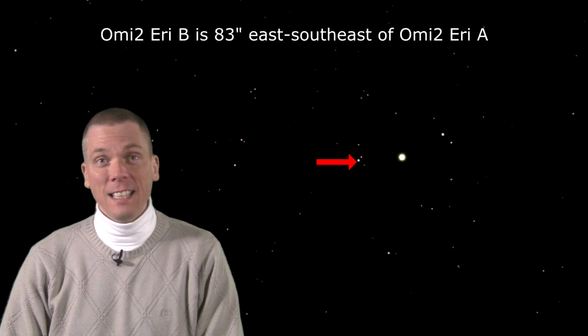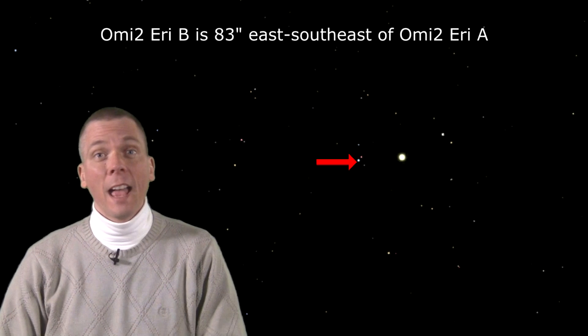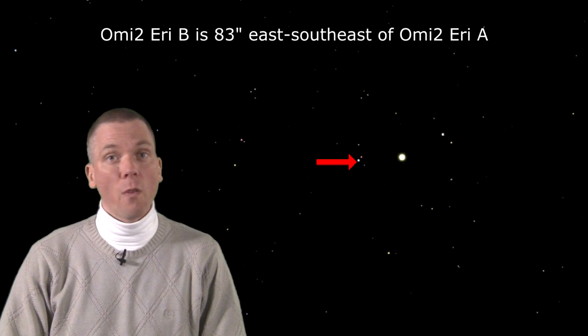It has a white dwarf companion at magnitude 9.5, probably the easiest white dwarf to find and see too, as the primary's glare does not overpower it.